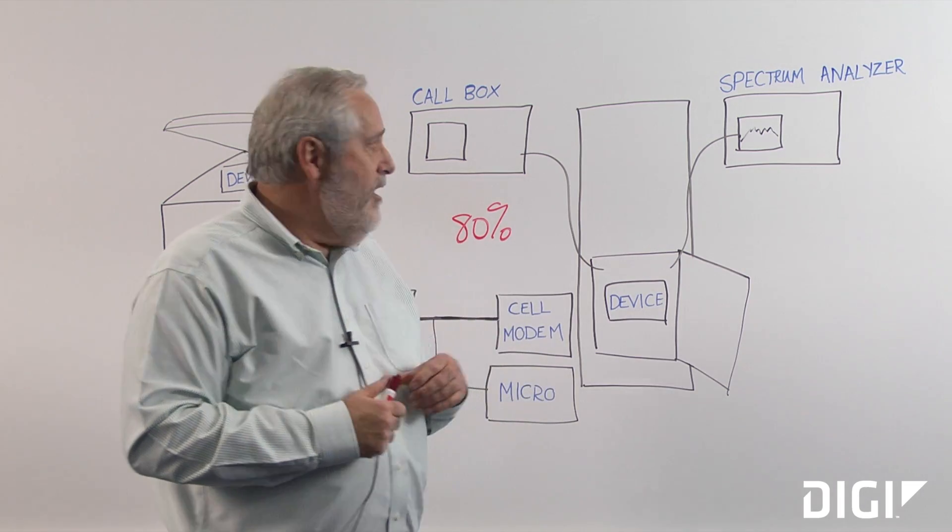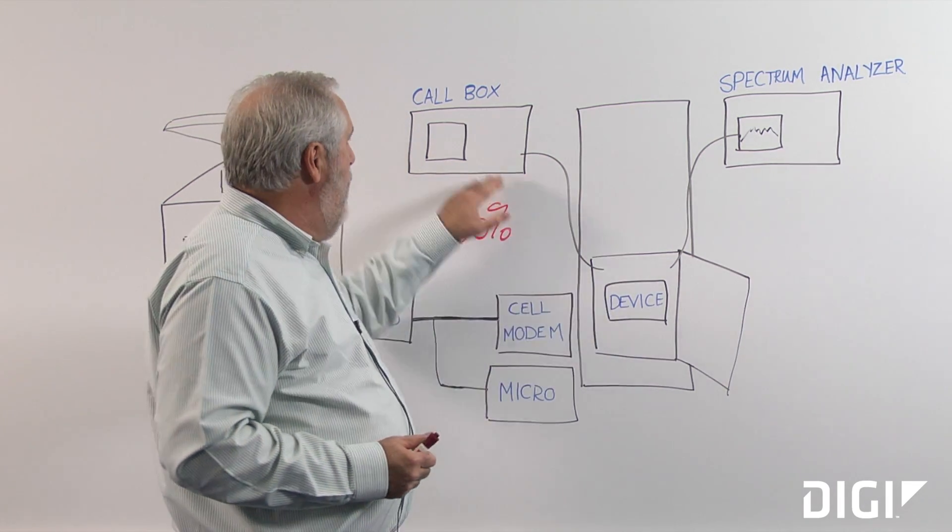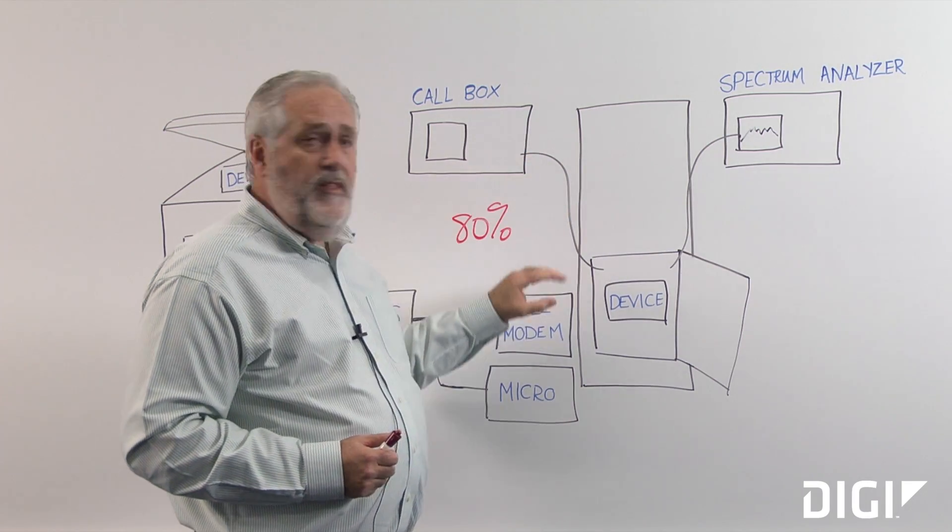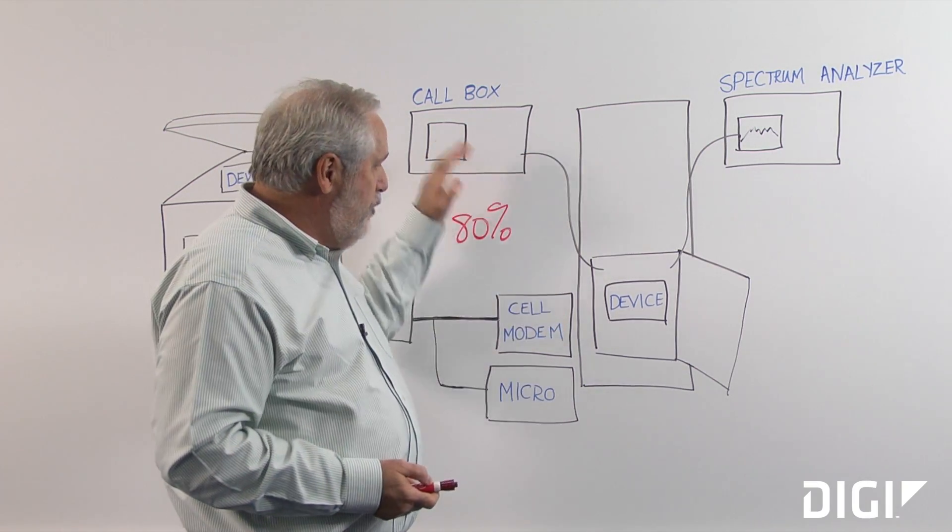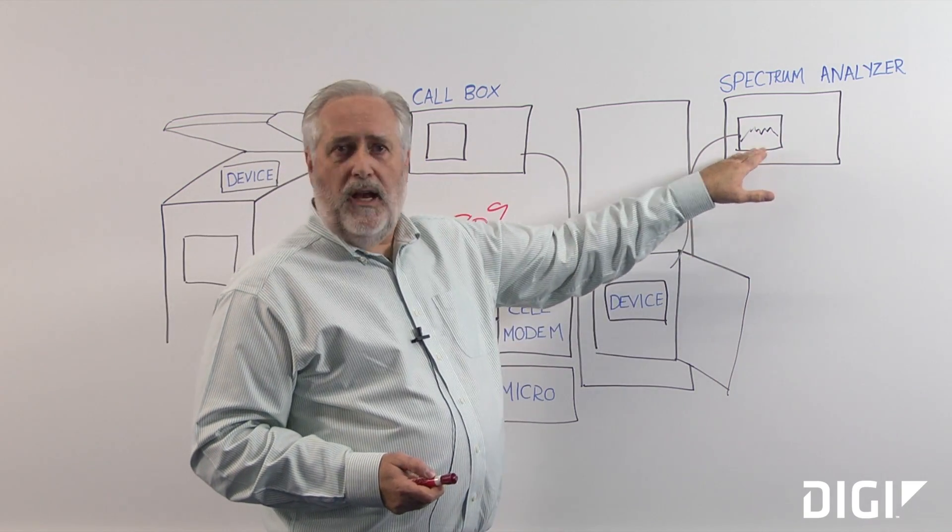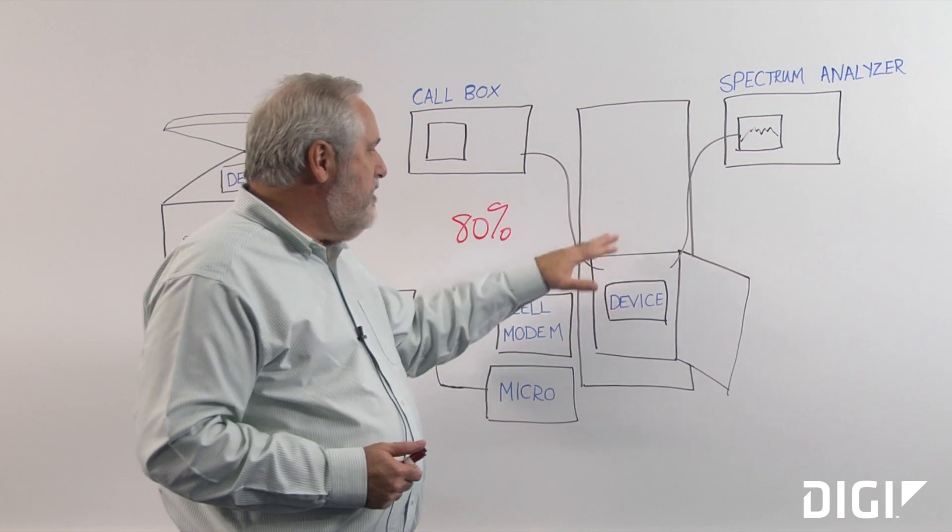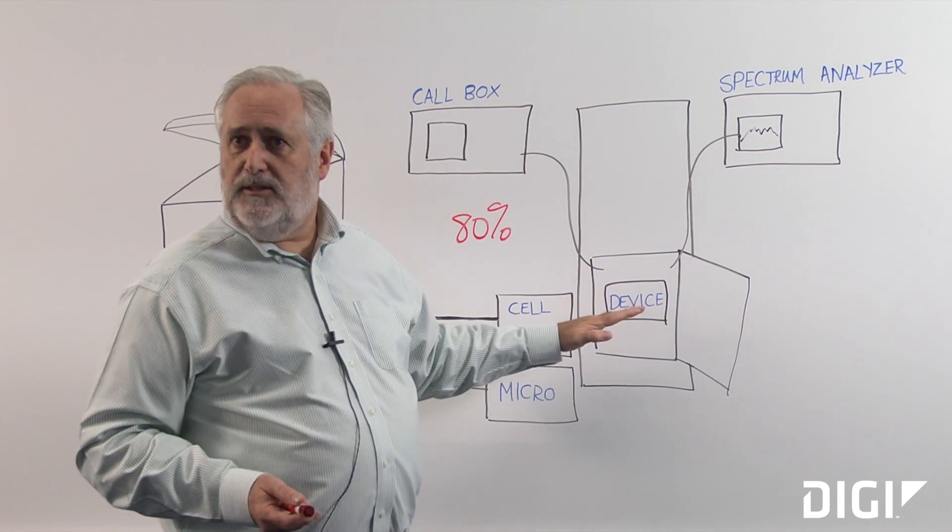So what we did is we took their device, we put it in an anechoic chamber, we hook up a call box that allows us to run the same RSE tests, so drive the device as if it was on the cellular network, we bring in a spectrum analyzer, and we look at the emissions, the noise, what are the signal levels that are going on as those tests are being performed.